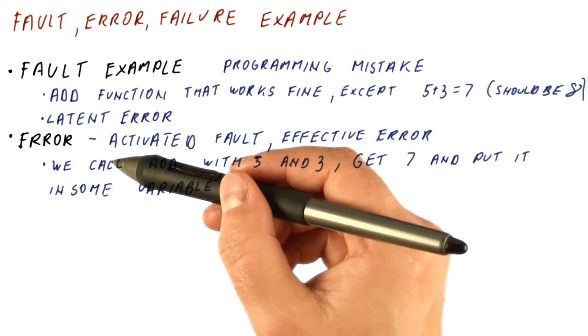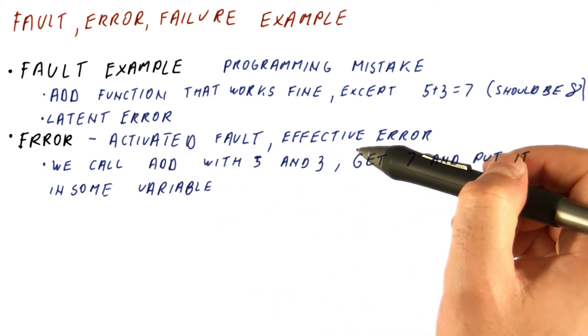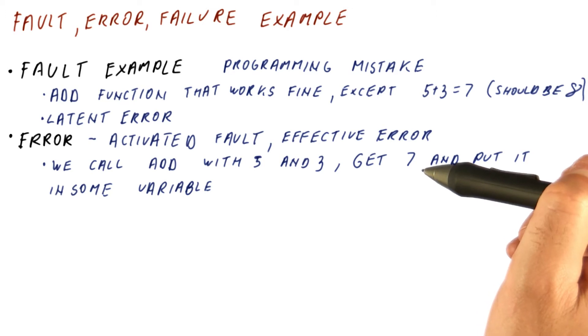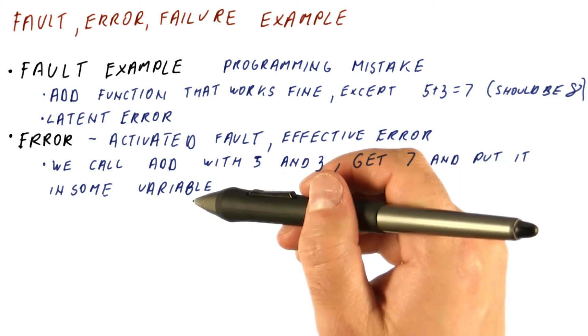In our case, we get the effective error once we call the add function with 5 and 3 and get 7 instead of 8, and then we put that value in some variable.